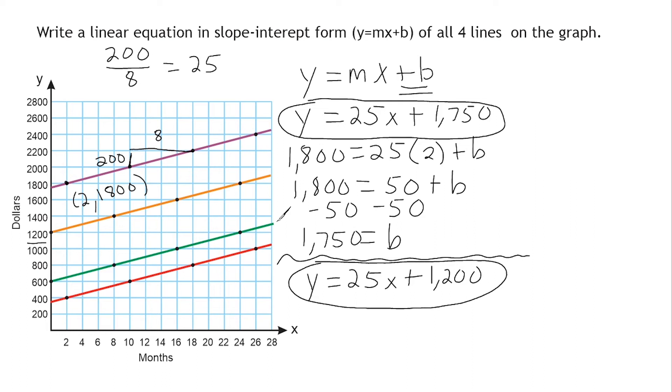So on to the green line right here. Once again, we can see that the slope is the same as the others, so that is going to be 25x, and this green line crosses the y-axis exactly at 600. So we just write 600 at the end.